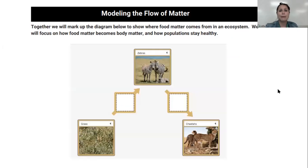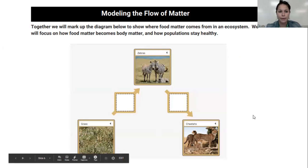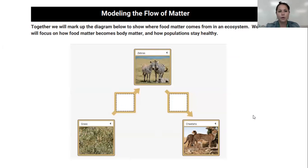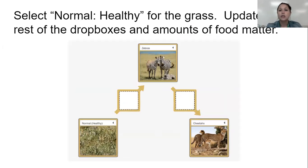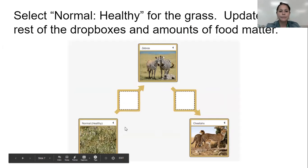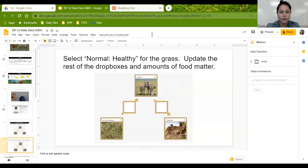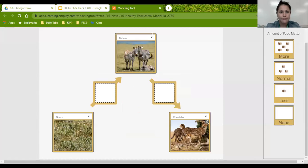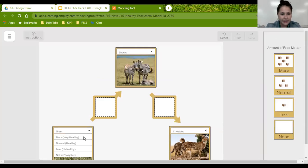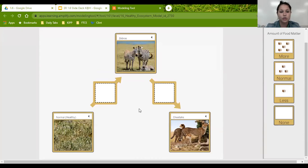Today we're going to be modeling the flow of matter through an ecosystem. We're going to talk about this diagram here to show where food matter comes from in an ecosystem, focus on how food matter becomes body matter, and how populations in ecosystems stay healthy. We're going to head over to this simulation model and use this drop-down menu to say that the grass is normal and healthy.